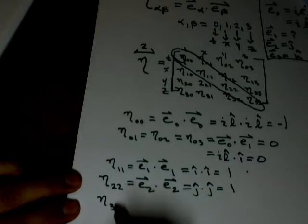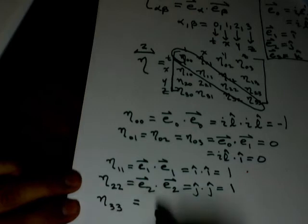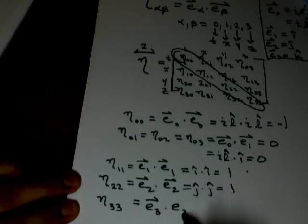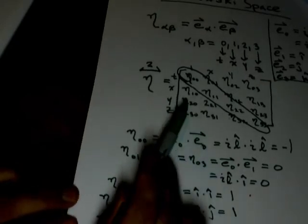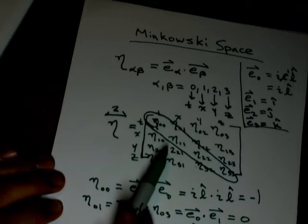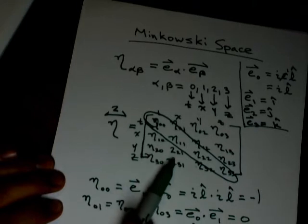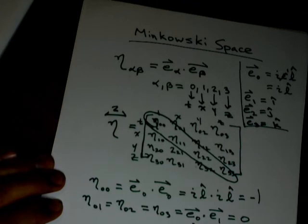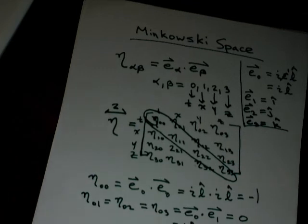And your e sub 3 basis vector, which is k hat dot k hat, which is equal to 1. And again, all these off diagonal terms of your metric are going to be 0. Because all our coordinates are perpendicular.